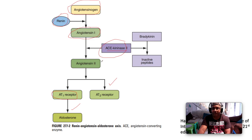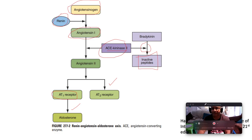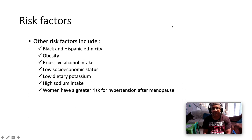Kininase 2 also converts bradykinin to inactive peptides. Patients on ACE inhibitors may develop angioedema and a dry persistent cough because the ACE inhibitor inhibits this enzyme, leading to accumulation of bradykinin.